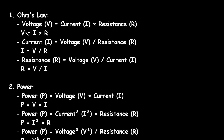Where V is the voltage, I is the current, and R is the resistance. We can rewrite this as I is equal to V by R, or R is equal to V by I.